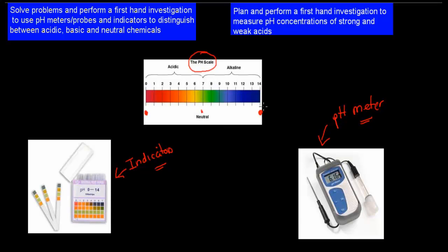The two dot points we're going to cover are: solve problems and perform a first-hand investigation to use pH meters/probes and indicators to distinguish between acidic, basic, and neutral chemicals. The other one was plan and perform a first-hand investigation to measure pH concentrations of strong and weak acids. So more or less, all we have to do is have our solutions and test them for their pH, and see that we can use those gathered pHs to label them as either acidic, basic, or neutral substances.